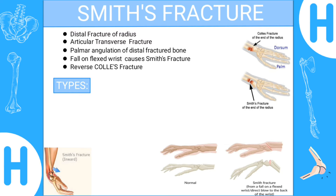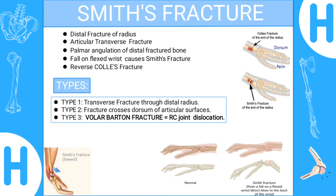There are three types of Smith's fractures. Type 1 is a transverse fracture through the distal radius. In Type 2, the dorsal articular surface is affected — the fracture involves the dorsum of the articular surface.